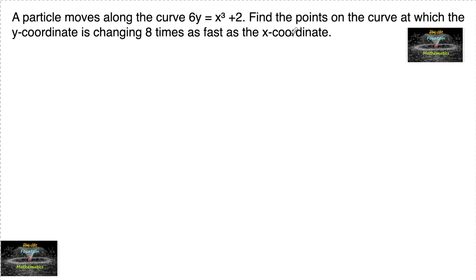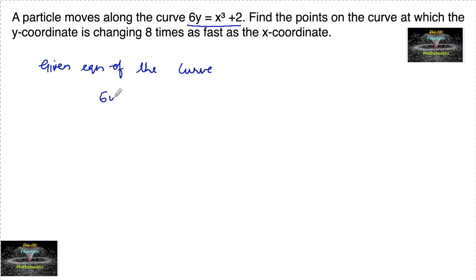A particle moves along the curve. Find the points on the curve at which the y-coordinate is changing 8 times as fast as the x-coordinate. The given equation of the curve is 6y = x³ + 2, and we need to find the points such that dy/dt is equal to 8 times dx/dt.